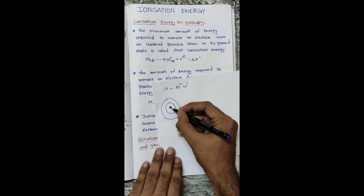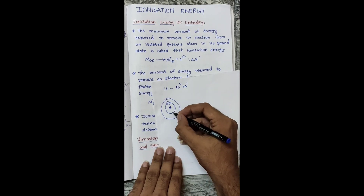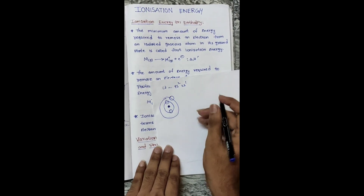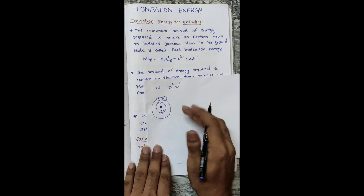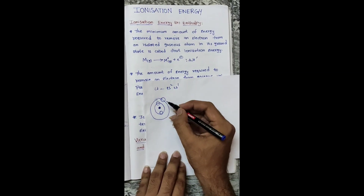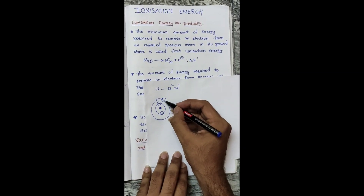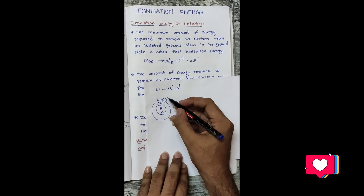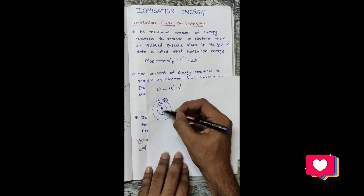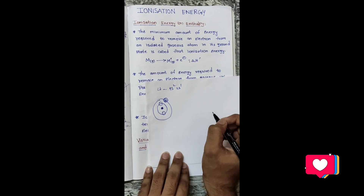Here is the nucleus: 1s contains 2 electrons and 2s contains 1 electron. So what is meant by ionization energy? The ionization energy is the amount of energy required to remove the outermost electron of an atom.